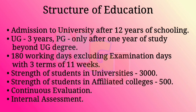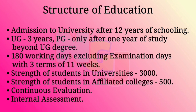Regarding the structure of education, the commission recommended admission to university only after 12 years of schooling. Undergraduate education must be of three years. Students must be admitted to postgraduation only after completing one additional year of study beyond the UG degree. The total number of working days was recommended to be 180, with three terms of 11 weeks duration, excluding examination days.